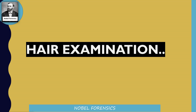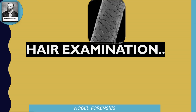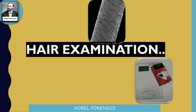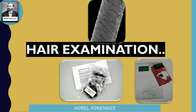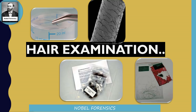What is forensic hair examination and how does it help in forensic investigation? Whenever hair samples are found at the crime scene, the investigating officer properly collects and packs them and sends them to the laboratory for further analysis. Along with the crime scene hair samples, suspect hair samples are also collected and sent to the laboratory for physical examination, chemical examination, and microscopic examination.